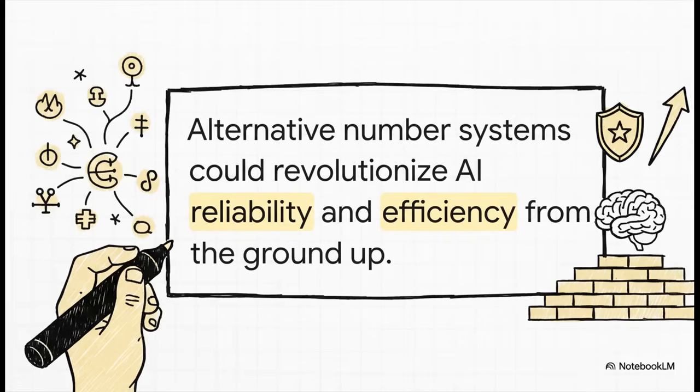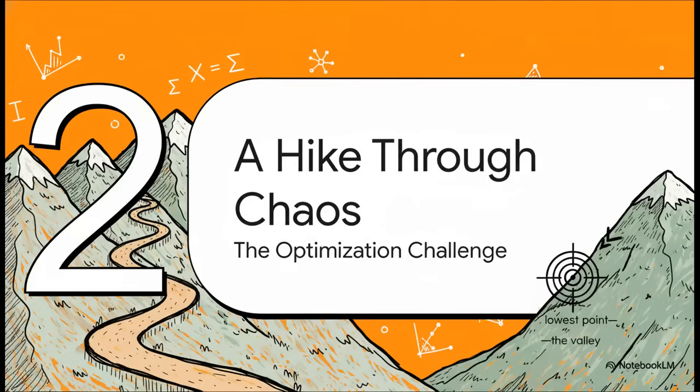But here's the big takeaway. This isn't some flaw that we just have to accept and live with forever. Not at all. It's a massive opportunity. A disruption opportunity. By going back to first principles and inventing new number systems, we can build AI that is fundamentally more reliable, more accurate, and way more efficient. Let's move on to our second pillar, because it all builds from here.